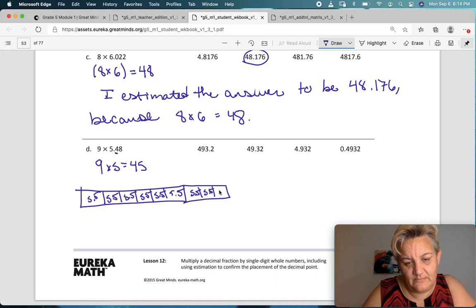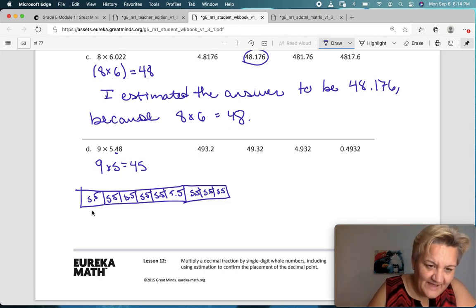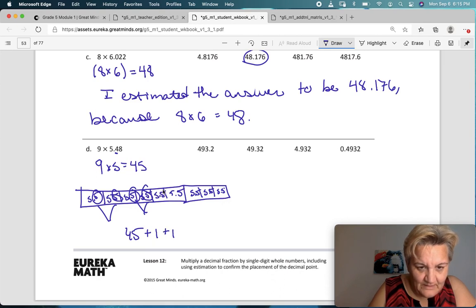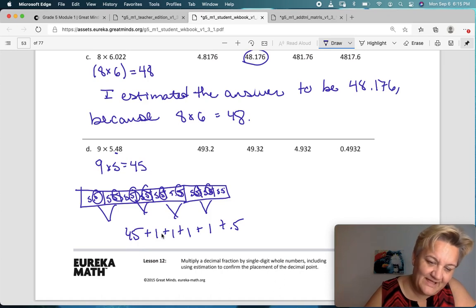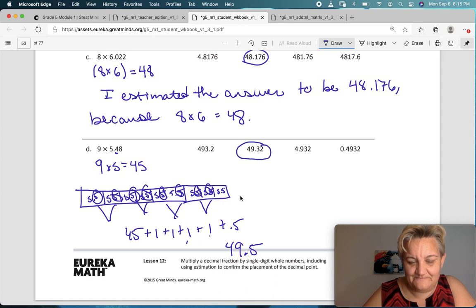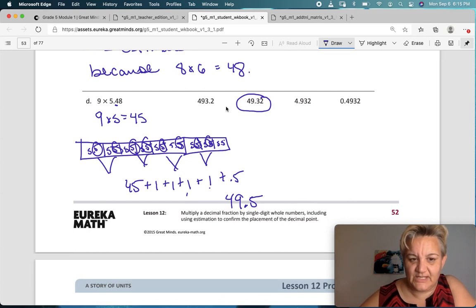So, 5.5, right? And 5.5, 3, 4, 5, 6, 7, 8, 9. You know what? I think I have a better way. But, we'll do it this way first. So, 5, 10, 15, 20, 25, 30, 35, 40, 45. And then, what do I have left over? I've got 0.5 and 0.5 equals 1. So, I've got 45 plus 1. 0.5 and 0.5 together equal 1, 0.5 and 0.5 together equal 1, 0.5 and 0.5 or 5 tenths and 5 tenths together equal 1. And then, at the end, I have another 0.5. So, 45, 46, 47, 48, 49 and 5 tenths. That's much closer, isn't it? 49.32. So, I think this is definitely your answer.